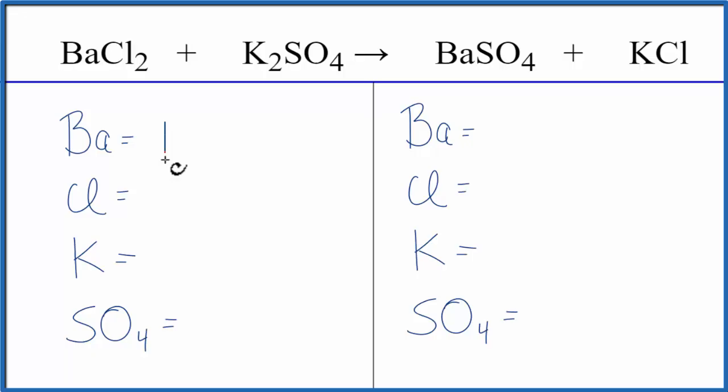We have one barium atom, two chlorines, two potassiums, and then this SO4, it's called the sulfate, it's a polyatomic ion. This SO4 stays together in the reaction, so we have an SO4 here, so we're just going to count it as one item, and that'll simplify balancing.